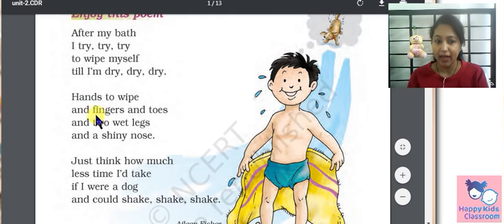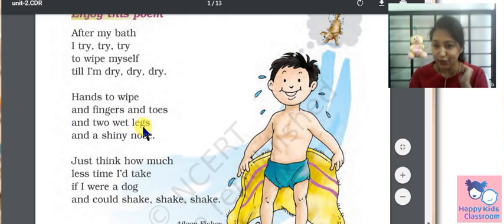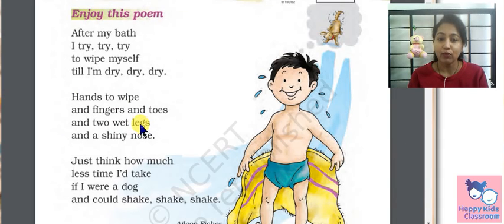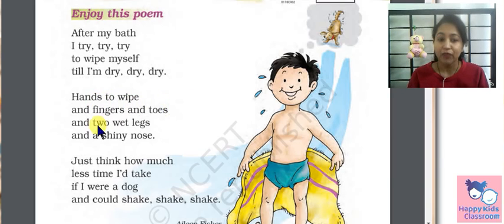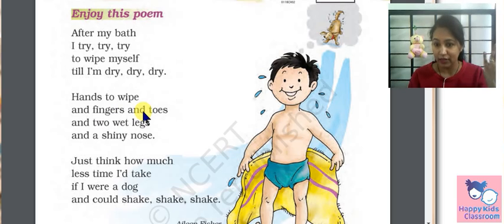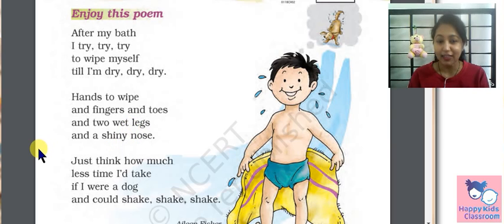Hands to wipe and fingers and toes and two wet legs and a shiny nose. So what is he saying? Hands to wipe. What is he trying to wipe? Fingers and toes. Two wet legs, two legs and a shiny nose.